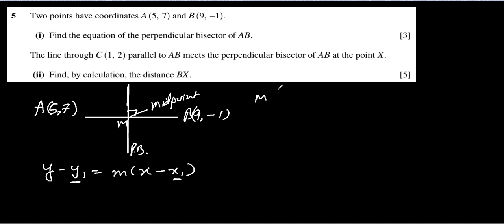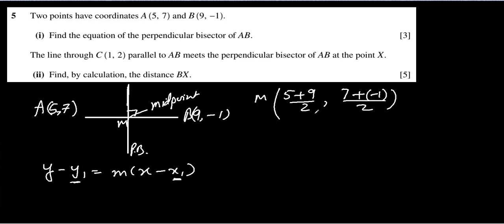The coordinates of M will be the x-coordinate of point A, which is 5, plus the x-coordinate of point B, which is 9, divided by 2; and the y-coordinate of A plus the y-coordinate of B, divided by 2. That comes out to be (7, 3). So we have found x1 and y1: y1 is 3 and x1 is 7.